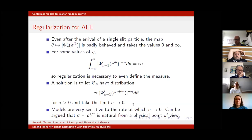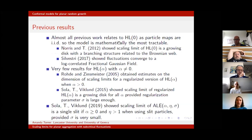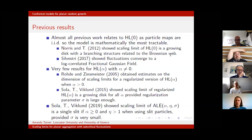What are the previous results about these models? Almost all previous work relates to HL(0), since this is the model where particle maps are i.i.d., making it mathematically most tractable. In 2012, James Norris and I showed that the scaling limit of an HL(0) cluster is a growing disk with an internal branching structure related to the Brownian web. More recently, Vittorio Silvestri showed that the fluctuations converge to a log-correlated Gaussian field.